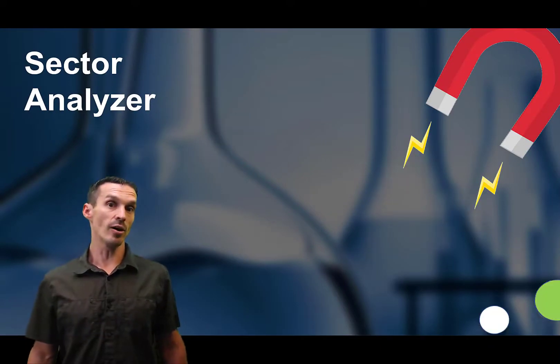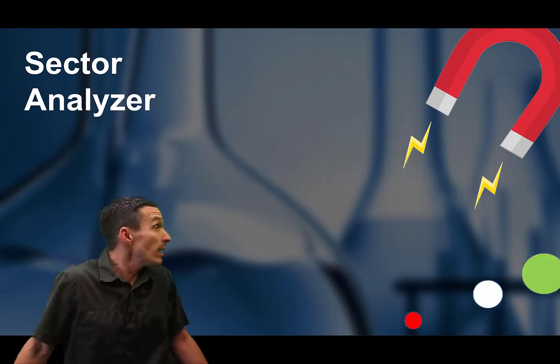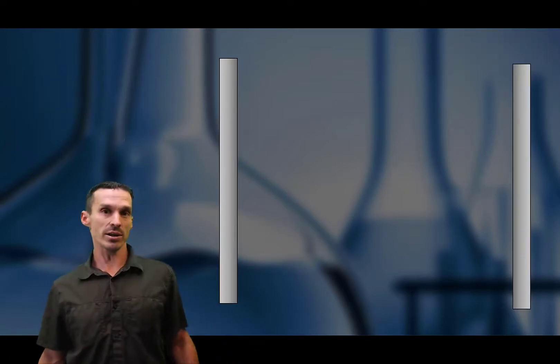And we finally get to talk about mass analyzers. So let's start with the beginning and talk about magnetic sectors. Actually let's talk about the electric sectors first.